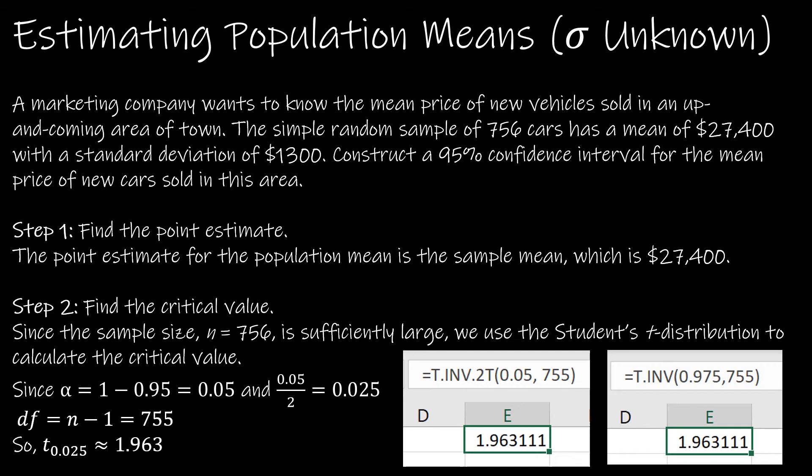Step one: we're trying to find a 95% confidence interval for the mean price of new cars sold in this area. The first thing is to find the point estimate, and we know that the point estimate is going to be the same as the sample mean. The sample mean was $27,400, so that is x bar.